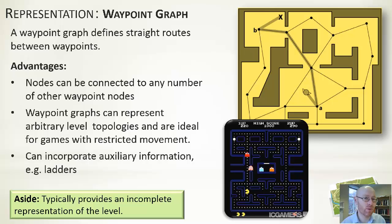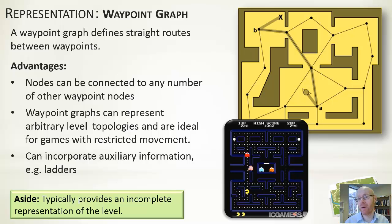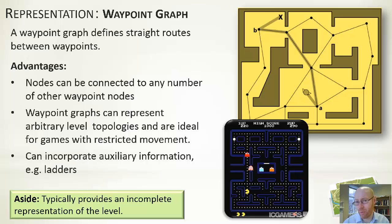Waypoints offer a flexible range of level designs. You can connect a waypoint to any number of others where there's a straight-line transition, representing complex topologies. They're particularly good for games with restrictive movement — like Pac-Man, where waypoints at connecting corridors with straight-line movement between them works well. You can also incorporate other information, like a ladder, with a waypoint at the bottom and top to handle complex 3D transitions. However, waypoints typically provide an incomplete representation since the character must move to the closest waypoint, and the actual target may be off the waypoint graph.